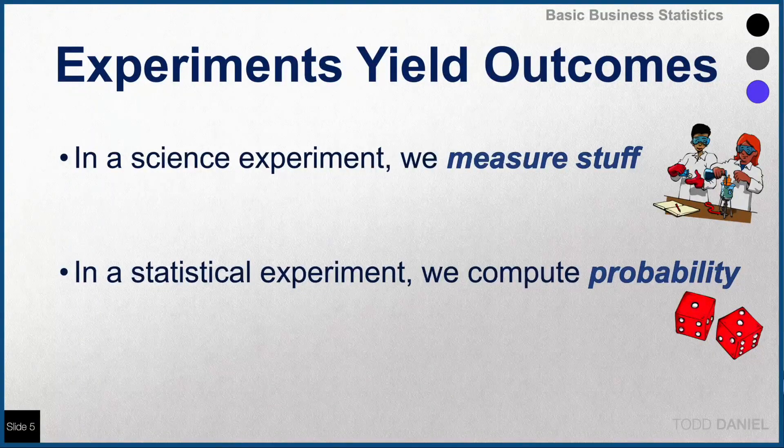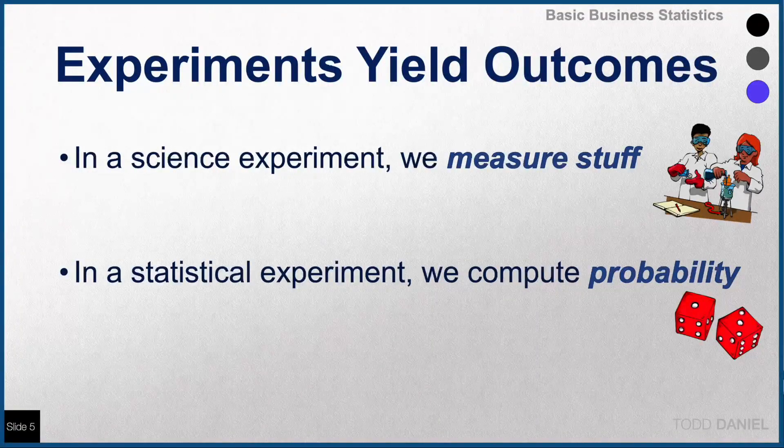And in a similar way, as we can do scientific experiments, we can also do statistical experiments to explore randomness and probability. In a science experiment, we measure stuff. In a statistical experiment, we compute probability.